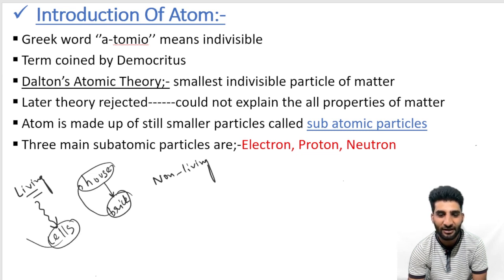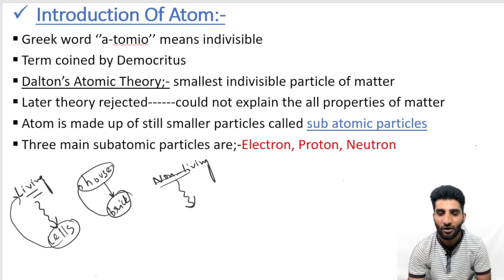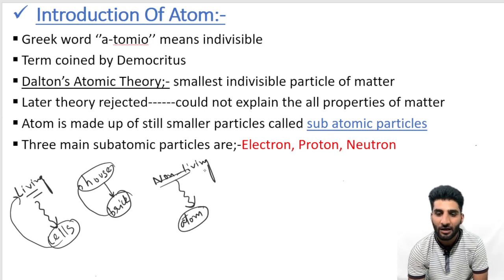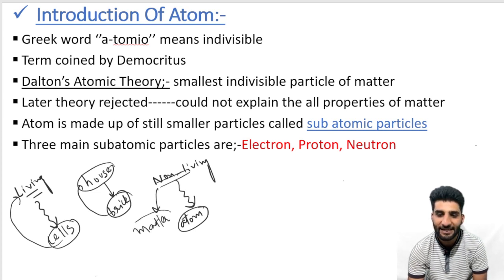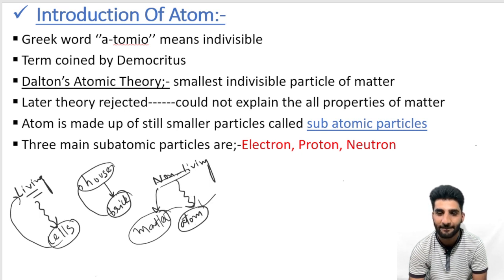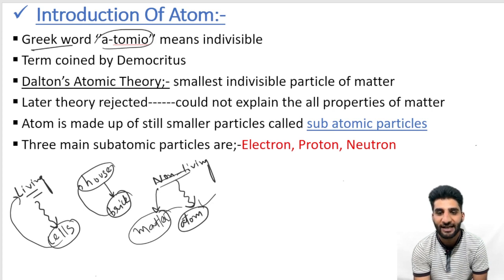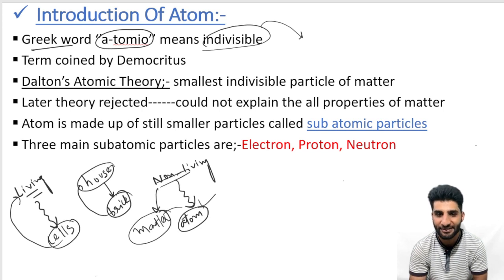The same is the case with non-living things — non-living things are also made up of small units, and we call these units as atoms. In chemistry, any non-living thing or any substance is called matter. We can say that matter is actually made up of small units called atoms. The word 'atom' is derived from the Greek word meaning 'indivisible' — that which cannot be divided into smaller units. This term was coined by the famous scientist Democritus.